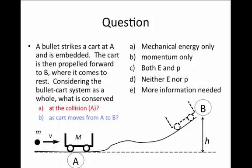First of all, at location A, when the collision has occurred, we should take note that the bullet has been embedded in the cart. That means that the two objects have stuck together. This signifies that an inelastic collision has occurred.